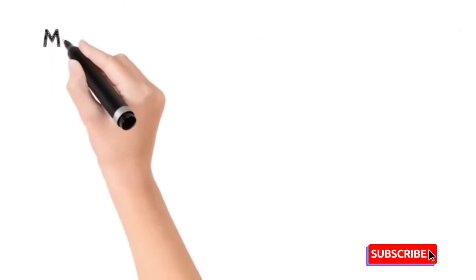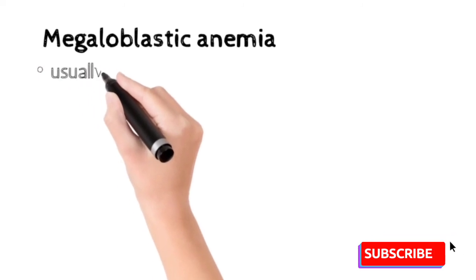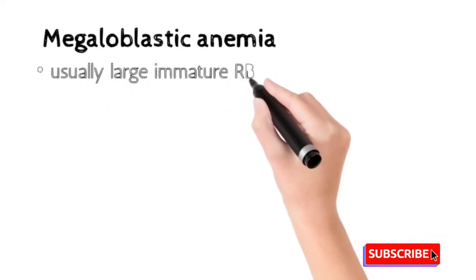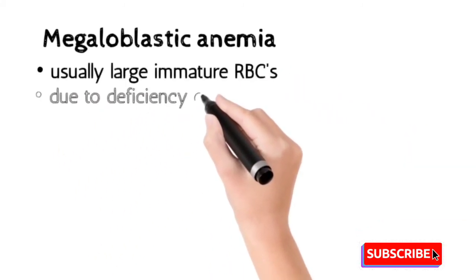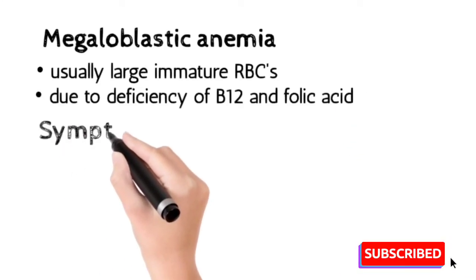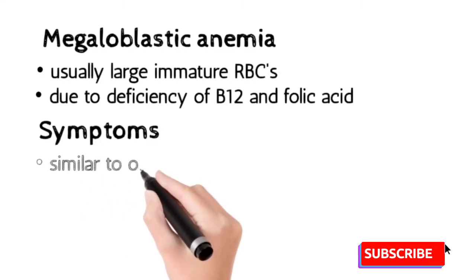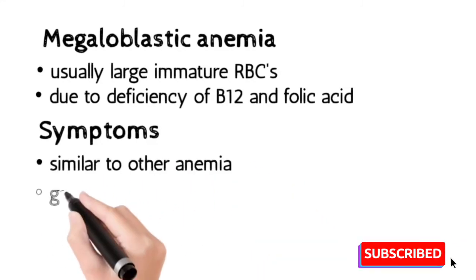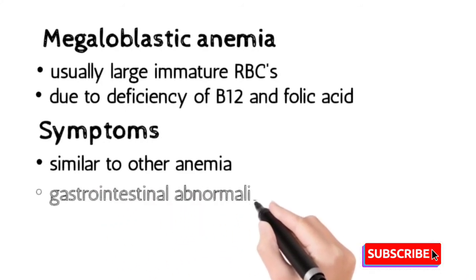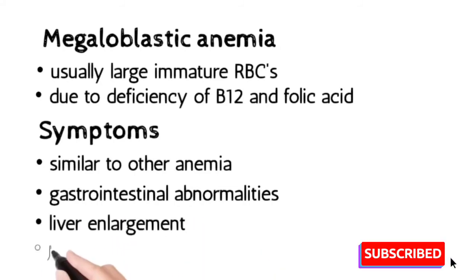In megaloblastic anemia, the RBCs are usually larger in size and immature in nature. This type of anemia occurs due to deficiency of vitamin B12 and folic acid. Some symptoms are similar to other anemic conditions, but distinct symptoms include gastrointestinal disorders or abnormalities, liver enlargement, and jaundice.